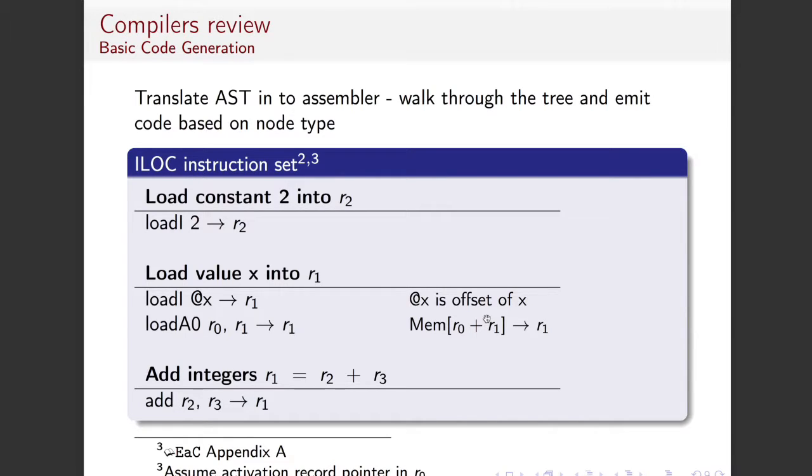All right. So this is called code generation, where we're going to take a bunch of code in the intermediate representations and blot out some assembly code. Now we are going to look at something called ILOC, which is an instruction set. Have you ever heard of ILOC? No. No, because it's not a real one. Okay. It's one that comes from the book.